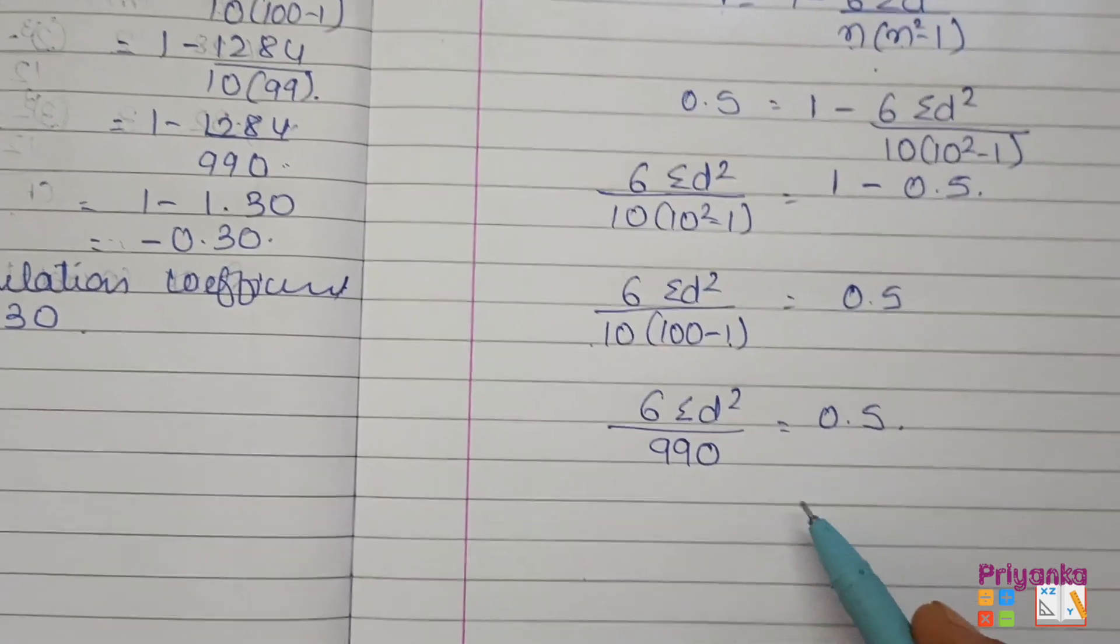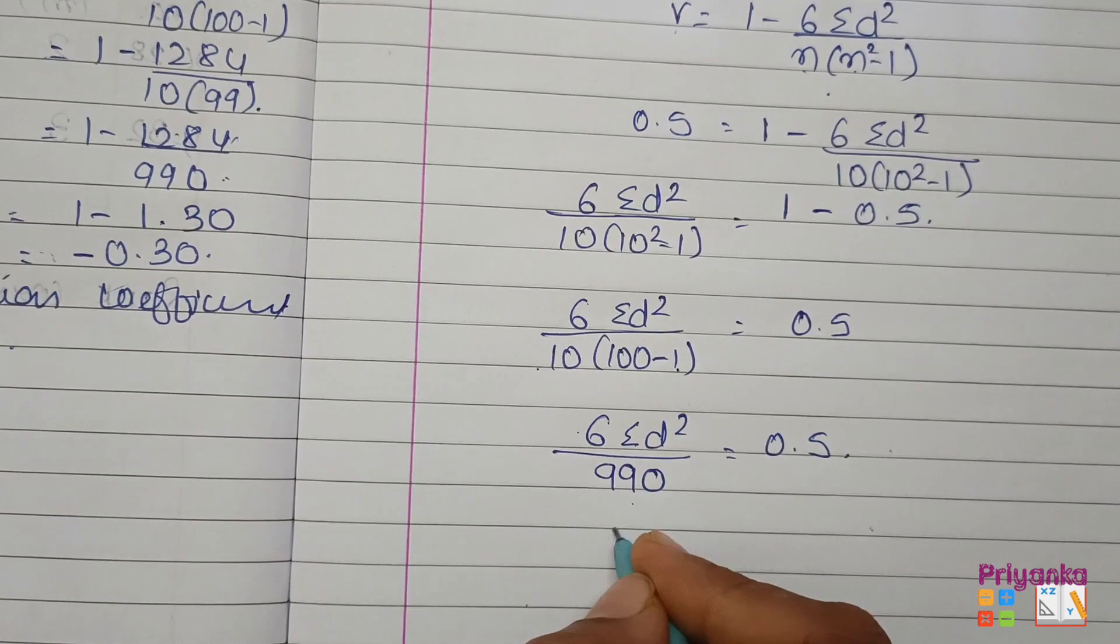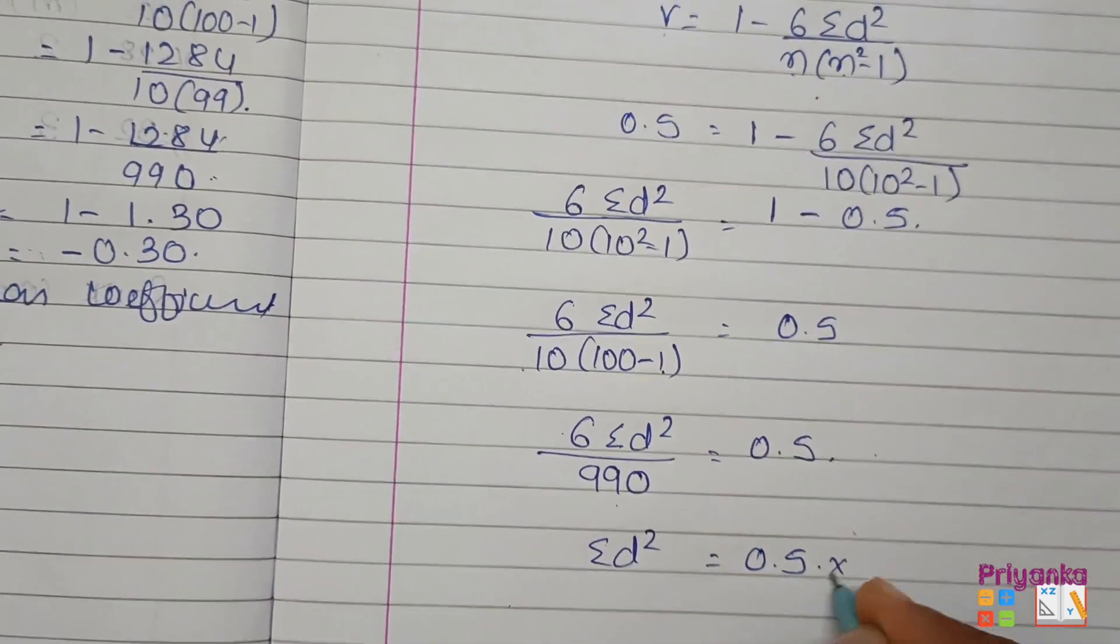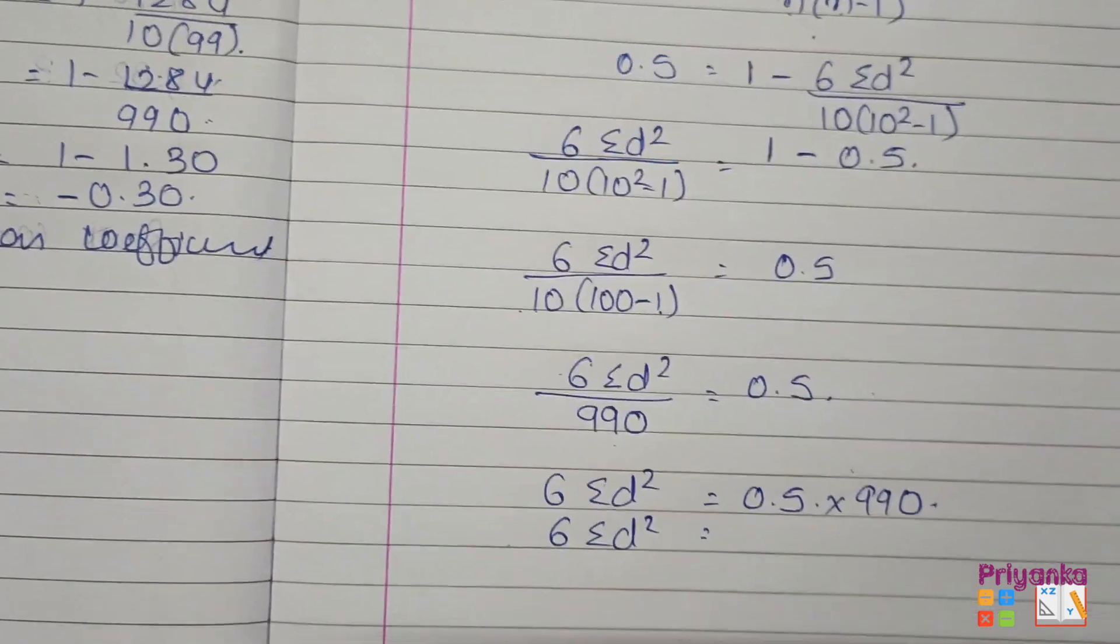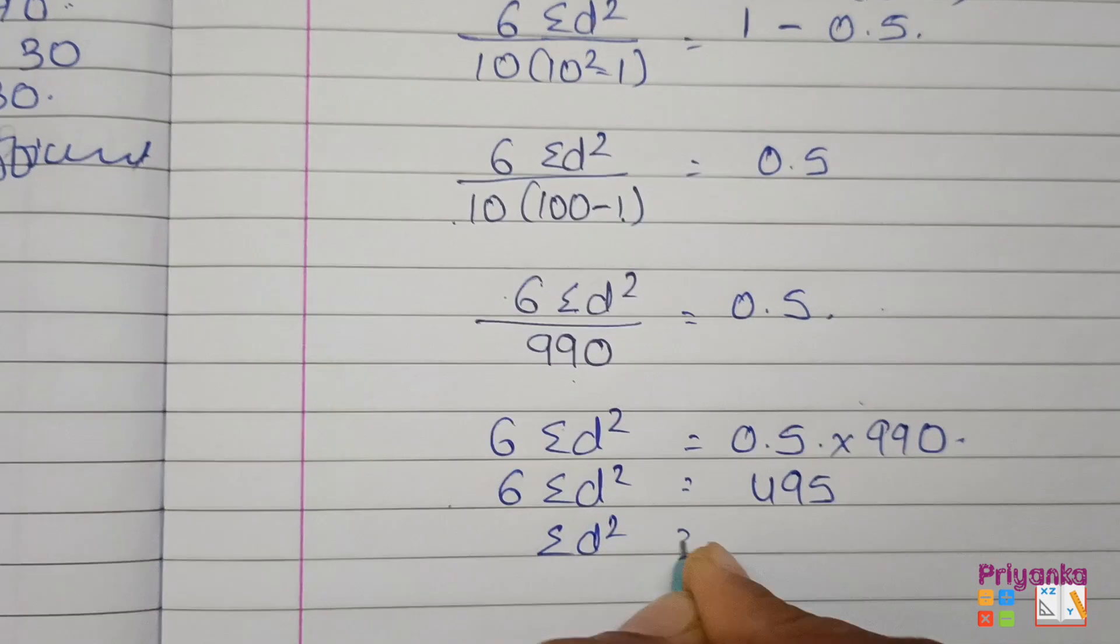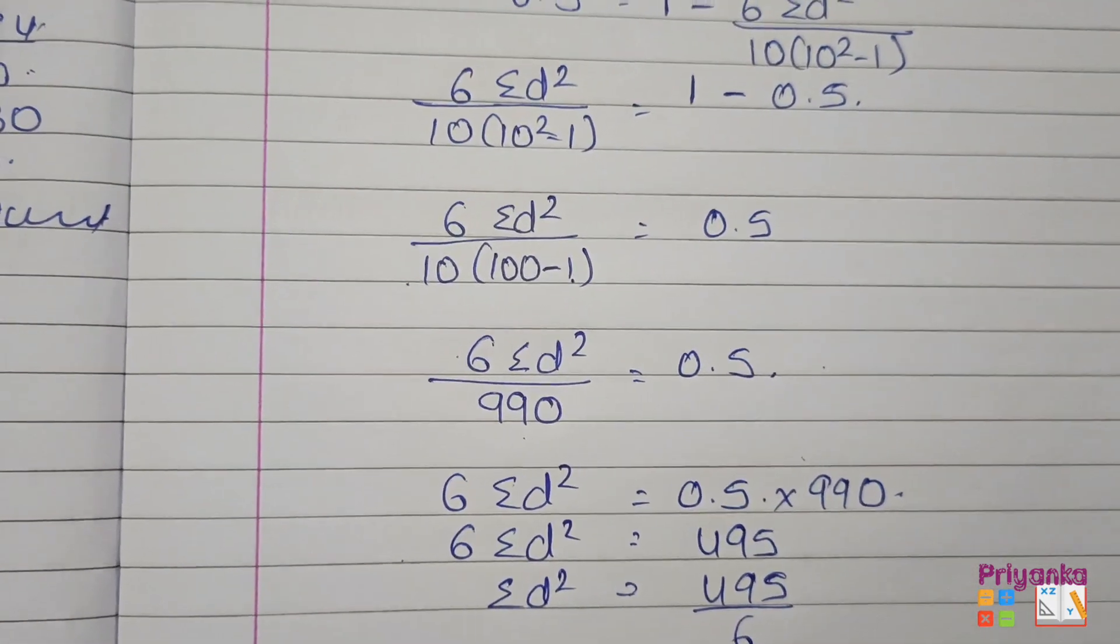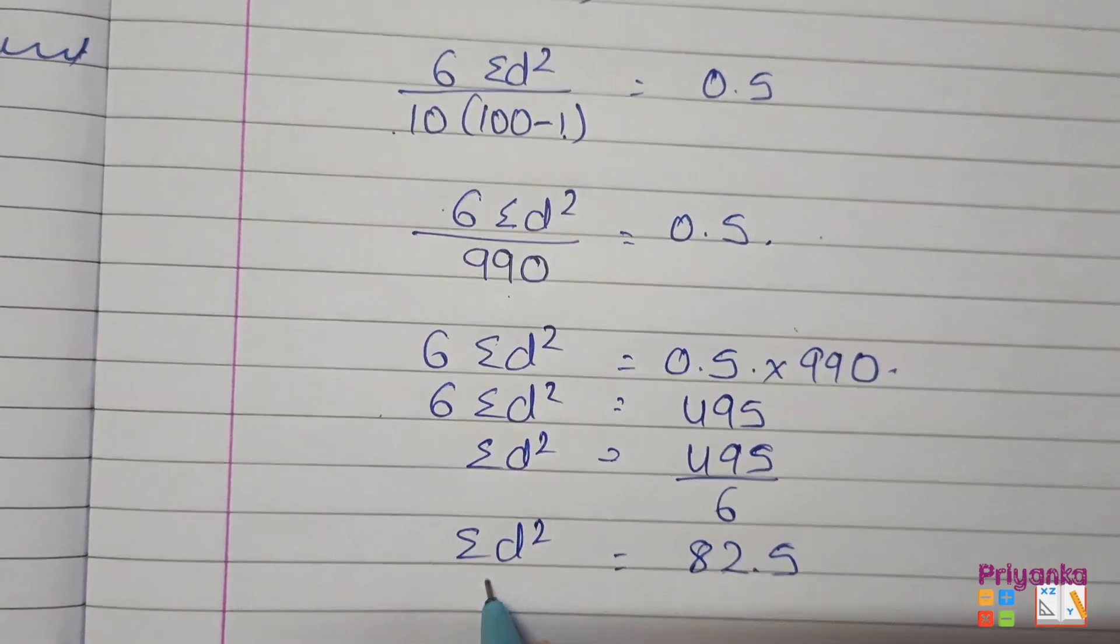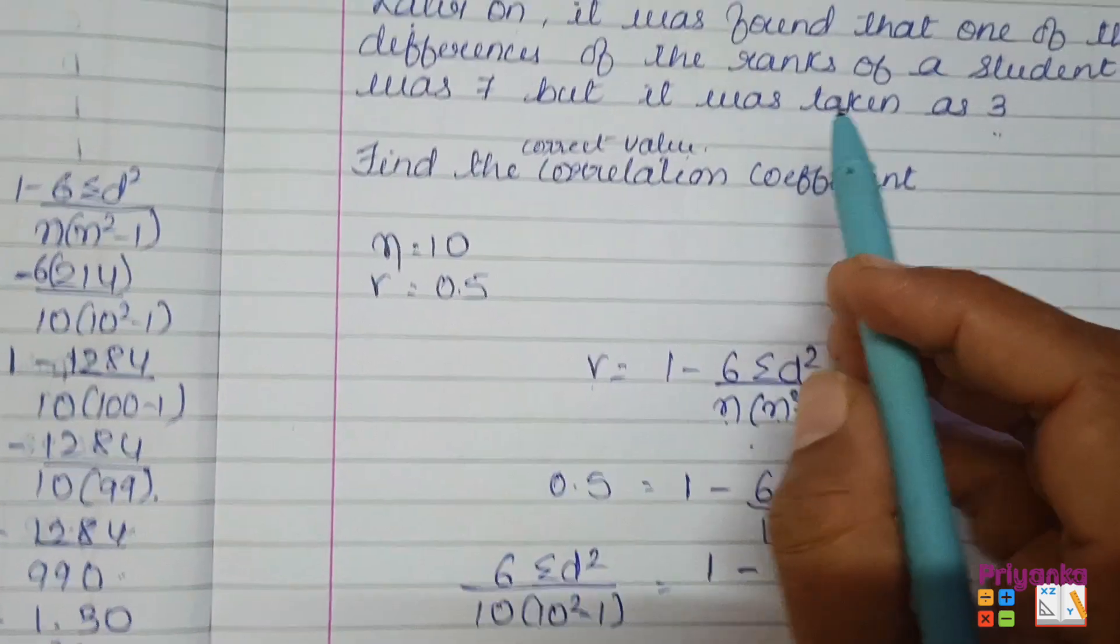Then after, remove the calculation of this: 6 sigma d square, here 100 minus 1 will be 99, 99 into 10 will be 990 is equal to 0.5. After this we can take the calculation back over here and take the 6 at the down, or you can do something like this: 6 sigma d square, 0.5 multiply by 990, just keep as it is. First of all multiply this, 495 sigma d square, take the 6 at the down, therefore here we get answer 82.5.